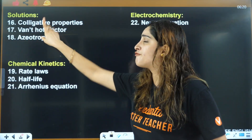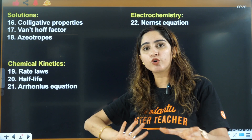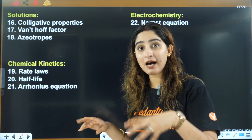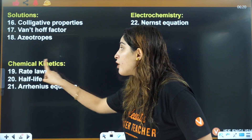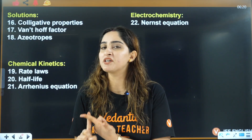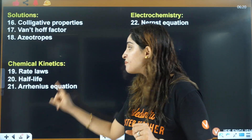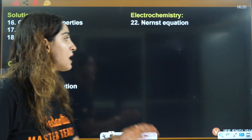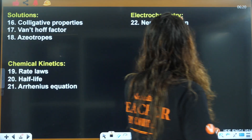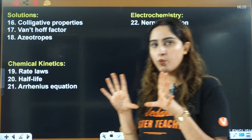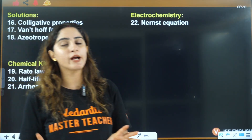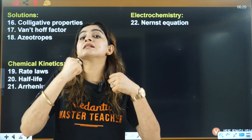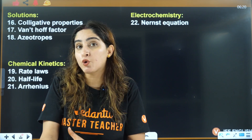From solutions, colligative properties with Van't Hoff factor included, and ideal vs. non-ideal solutions with examples. From chemical kinetics, major topics are zero order and first order formulas, t-half, and the Arrhenius equation — its graph and formula-based questions. From electrochemistry, the most famous topic is the Nernst equation, including the relation of ΔG and equilibrium constant K.